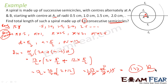The answer is 143 cm. Each semicircle has length π×r, and these form an AP with A = π/2, D = π/2, and N=13. We summed all the semi-perimeters to get 143.